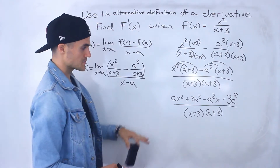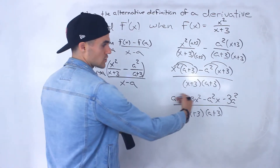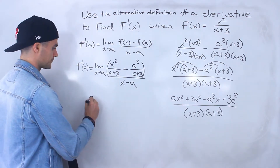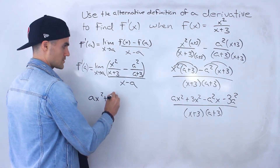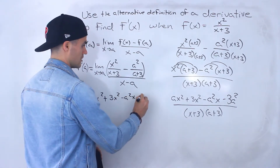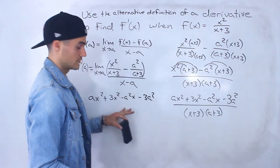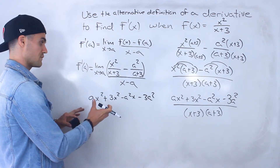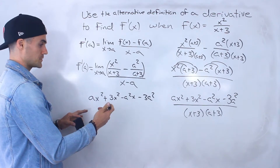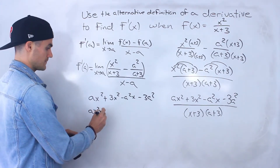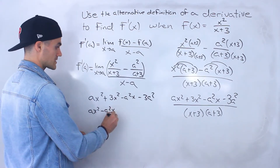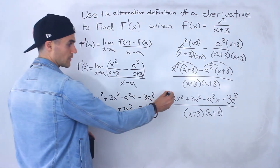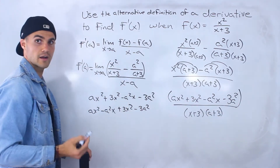Now we can simplify this numerator. There are no like terms that can cancel, but we can actually factor it. The way to do this is by factoring by grouping. We combine ax squared with minus a squared x, and then 3x squared with minus 3a squared.